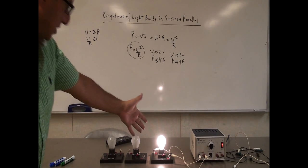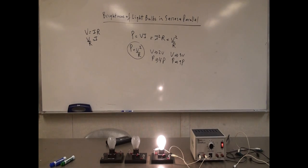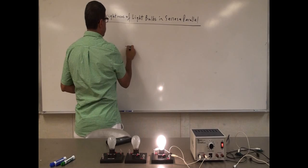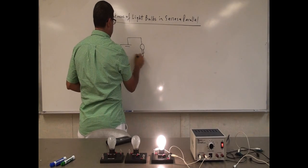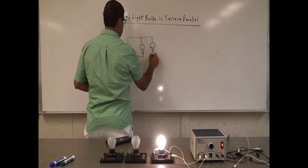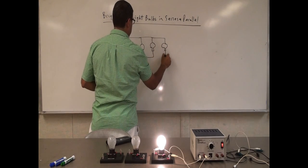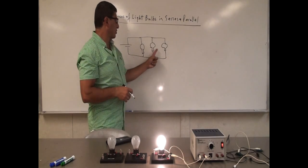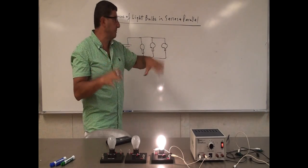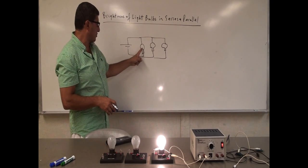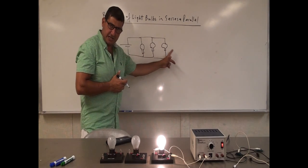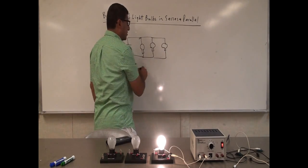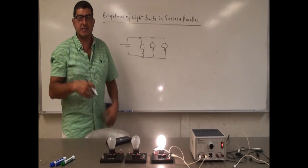Now the next thing we're going to do is put light bulbs in parallel with each other. Parallel means to put them like this — you have a light bulb, then put another light bulb, then put another light bulb. So if I put two or three light bulbs in parallel, what happens? In parallel, the voltage across each one will still be the same — the same as the power source. So if I put 12 volts across one light bulb and I still have three or four light bulbs, they all will have 12 volts.